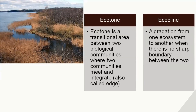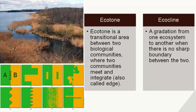An ecocline is the gradation from one ecosystem to another when there is no sharp boundary between the two. For example, in a marine ecosystem, there is no distinct boundary between a high-saline zone and a low-saline zone, but some species are adapted to high salinity and others to low salinity. Unlike an ecotone, where there is a clear separation point between aquatic and terrestrial, in an ecocline there is no distinct separation — we cannot distinguish which is high-saline water and which is low-saline water.